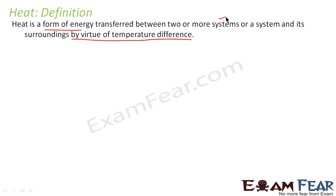Heat is a form of energy which transfers from one object to another, or between the system and the surroundings, by virtue of temperature difference. If two different systems have two different temperatures, heat will get transferred from one to another. But if two systems have the same temperature, there will be no flow of heat. So heat transfer takes place only when there is a difference in temperature between two objects.